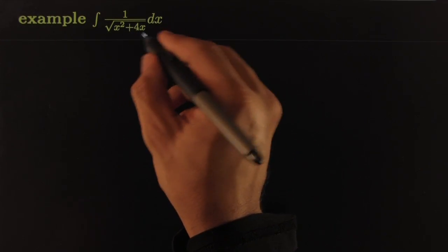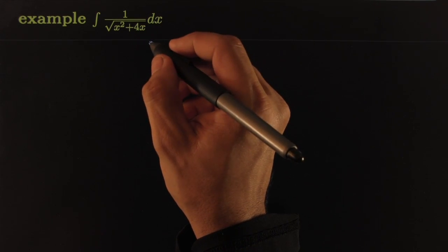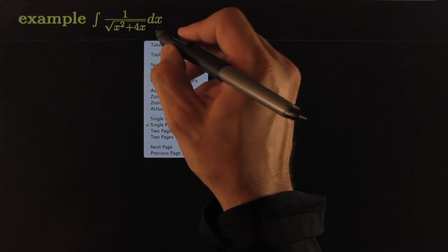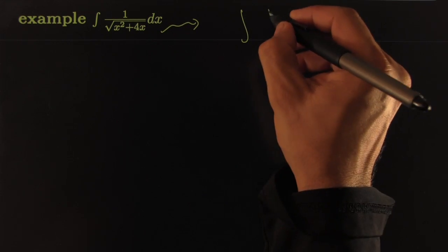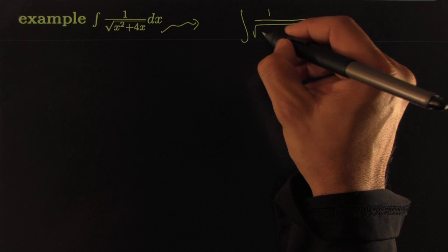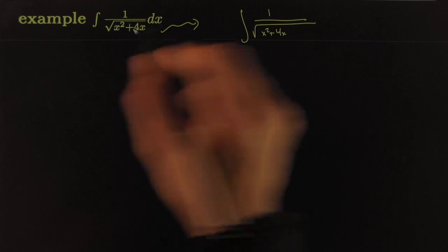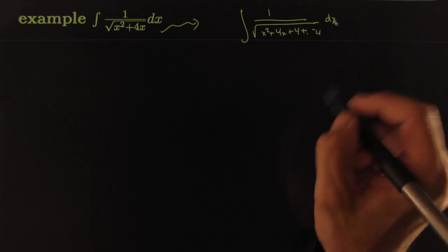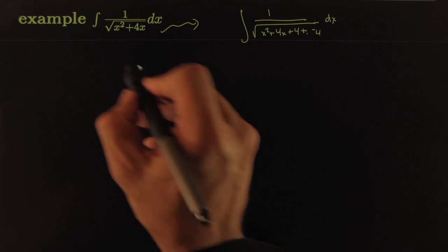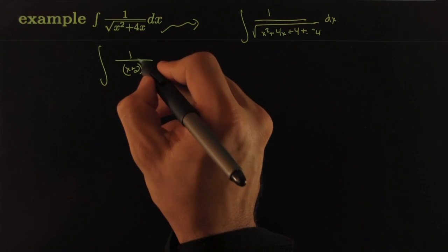There are two ways to go about this. One option would be to complete the square on the expression 1 over the square root of x² + 4x. To complete the square, take half of the middle term — in this case 2 — square it, add it, and subtract it so the expression is unchanged. That gives us 1 over x plus 2 squared minus 4, times dx.